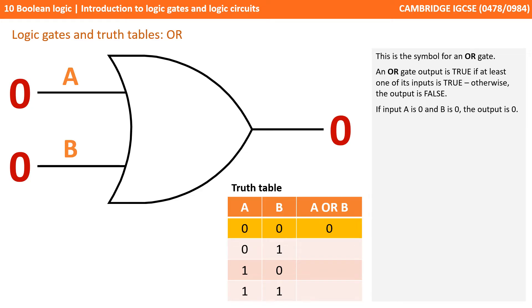Here we see the symbol for an OR gate. With an OR gate the output is true if at least one of its inputs is true. Otherwise the output is false. So if the input A is 0 and B is 0, then the output is 0.